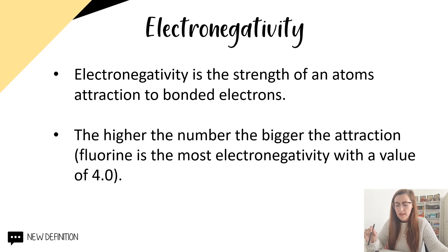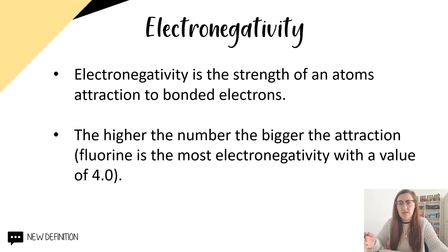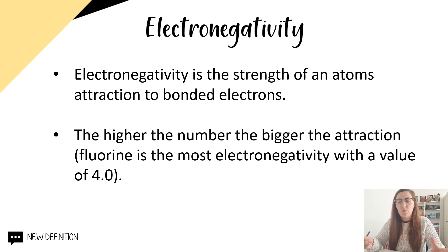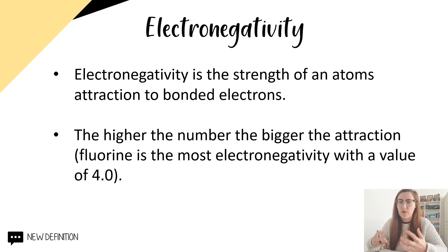For example, fluorine has an electronegativity value of 4, so it has a very strong attraction for bonded electrons, whereas cesium has an electronegativity value of 0.8, so it has a very low attraction for bonded electrons. All that means is that fluorine wants to pull electrons towards itself, and cesium doesn't feel that urge as strongly.